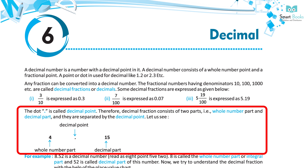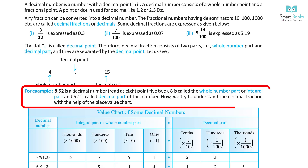The whole number part and decimal part are separated by the decimal point. For example, in 4.15, 4 is the whole number part and 15 is the decimal part. For example, 8.52 is a decimal number, read as 'eight point five two.' Here, 8 is called the whole number part or integral part, and 52 is called the decimal part.